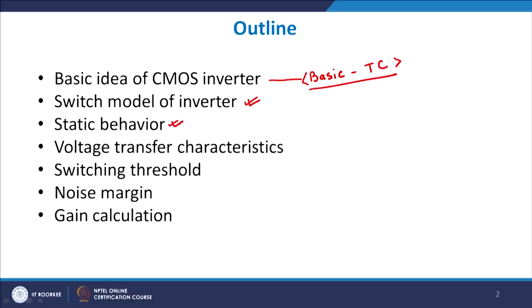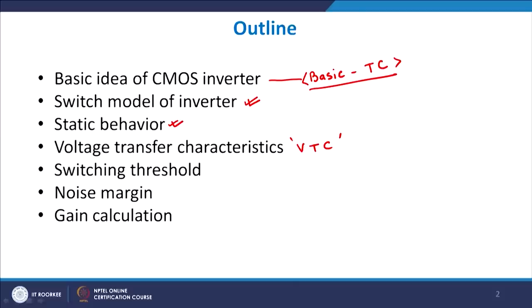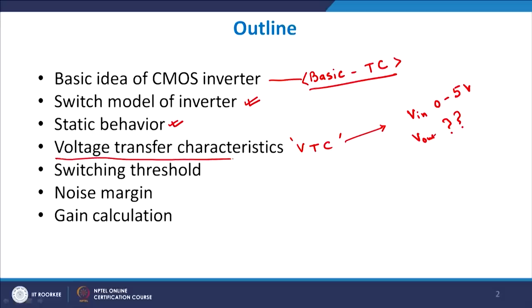After having done the switch model of the inverter, we will go for the static behaviour analysis. Static behaviour primarily means that if you give a DC bias, how will the output voltage change with respect to that DC bias for an inverter. We will also look at how to draw a voltage transfer characteristic — if the input varies from 0 to VDD, how does the output vary in response.